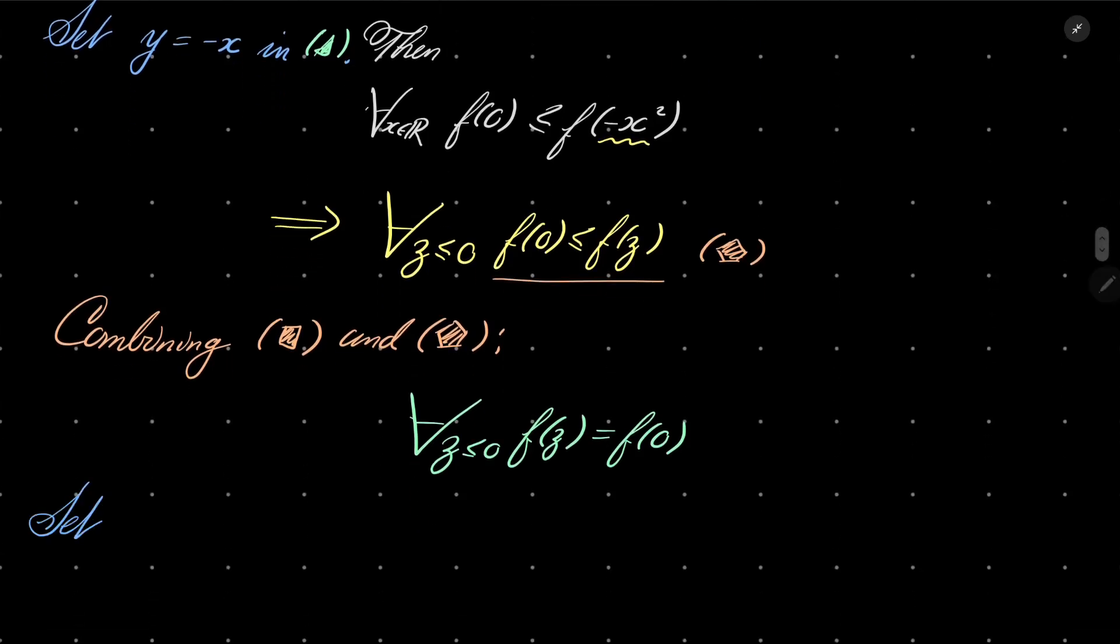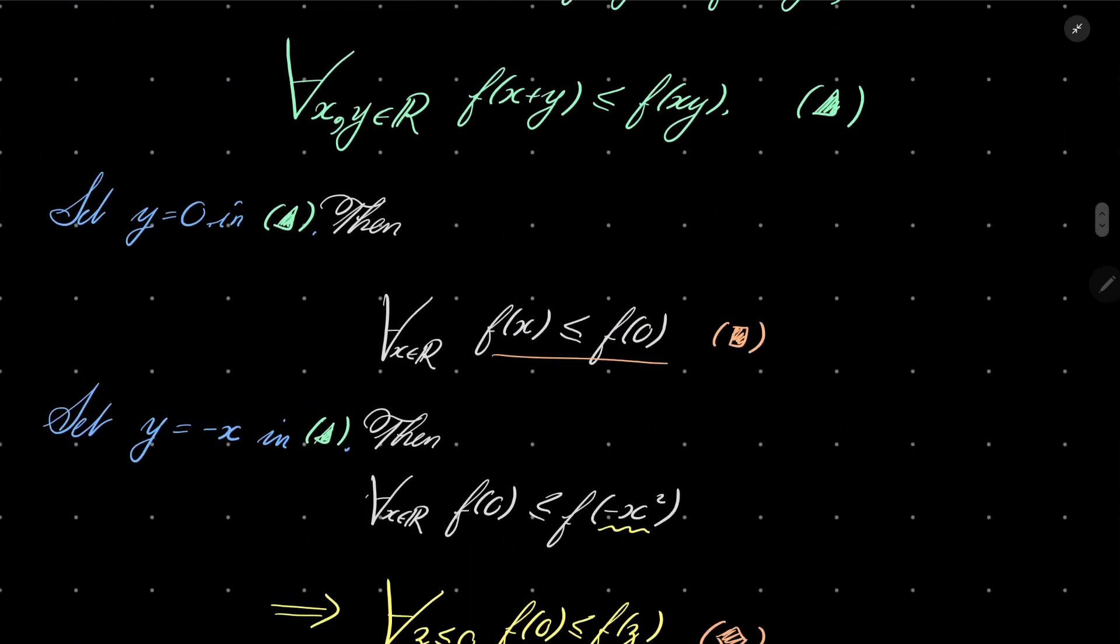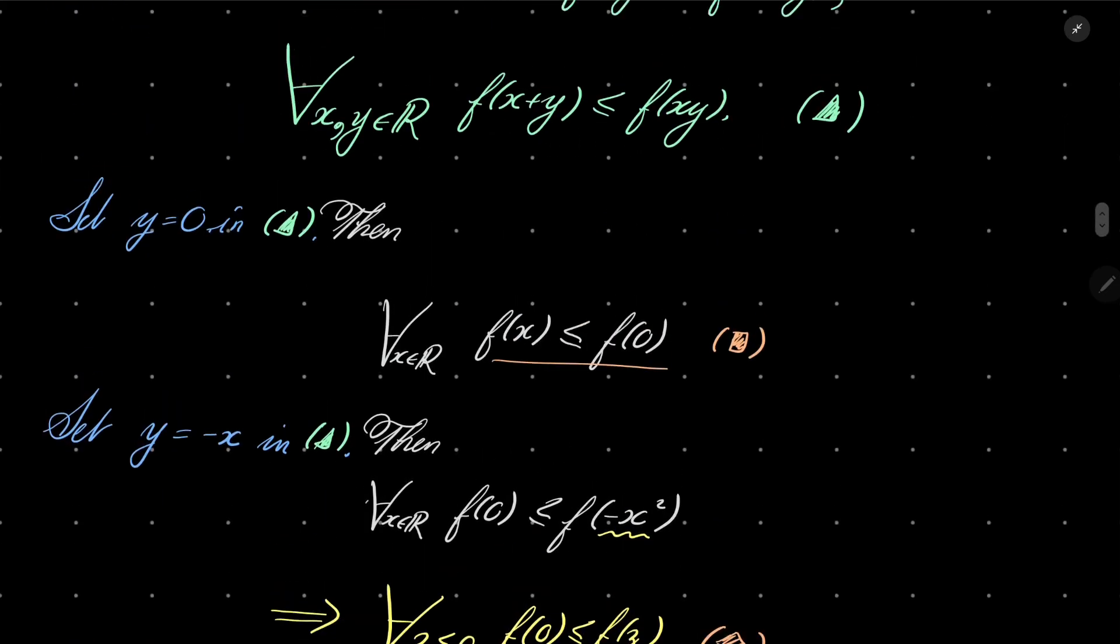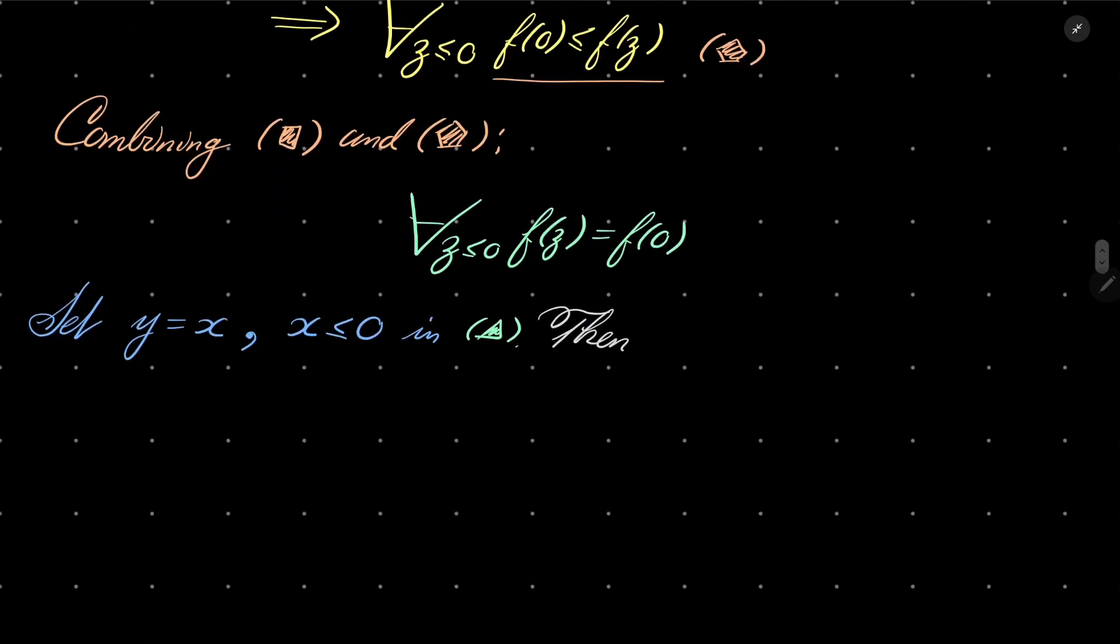What about positive numbers? Well, let's finally set y to be x and let x be a non-positive number in our condition green triangle. Then what do we have? Here we have f(2x) and here we have f(x²). For every non-positive x, f(2x) is less than or equal to f(x²).